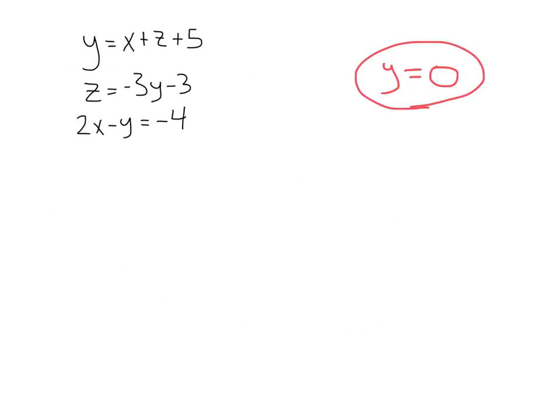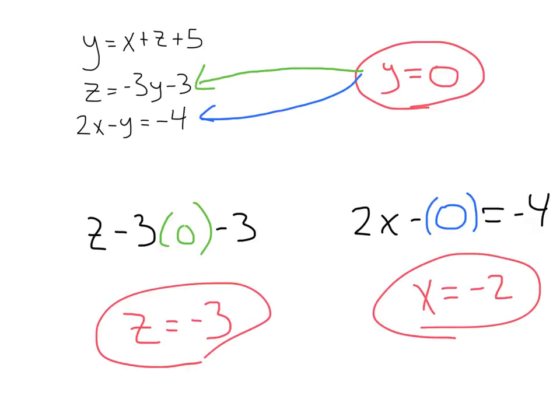Woo, alright, after all that work, now it's the fun part. Let's plug that y value into these other equations and finish her up. Plugging those in, we'll get z minus 3 times 0, 3 times y, 3 times 0 minus 3, or z equals negative 3. And plugging into our last equation, we'll get 2x minus, instead of y, plug in 0 equals negative 4, and x equals negative 2.